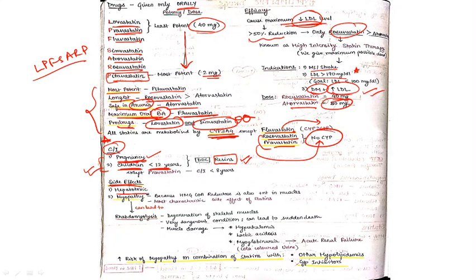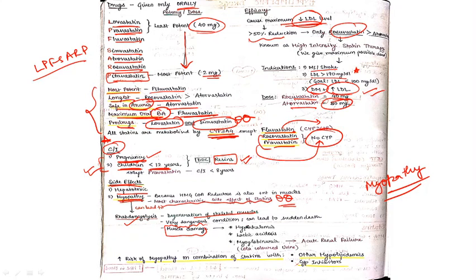Side effects of statins: first is hepatotoxicity. Second and most characteristic is myopathy. This myopathy leads to rhabdomyolysis — degeneration of skeletal muscle. This is dangerous and causes electrolyte imbalances including hyperkalemia, lactic acidosis, and myoglobinuria, leading to acute kidney failure. There is increased risk of myopathy when combining statins with other hypolipidemic drugs and CYP inhibitors.